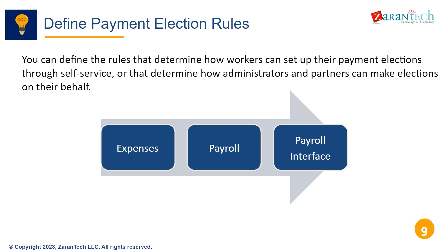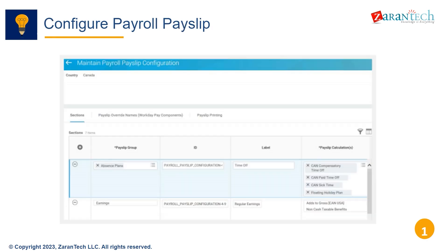Payment election rules determine how workers can select payment methods in self-service, or how administrators can elect on their behalf. These rules provide flexibility while enforcing compliance. Configuring payroll payslips involves selecting the payslip style, adding custom messaging, choosing paper size, and determining delivery methods like print, email, or web.